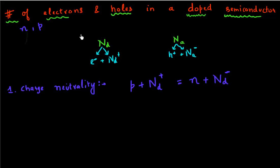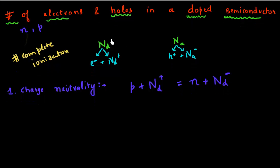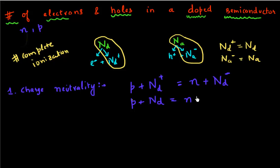I'll further assume complete ionization of these atoms. That means if I'm adding Nd number of donors, all of them will ionize and produce Nd+ positively charged atoms and an equivalent number of electrons. Similarly, I'll assume complete ionization of my acceptor atoms. So I can assume Nd+ equals Nd, and Na- equals Na. I can rewrite this condition as: P plus Nd equals N plus Na.